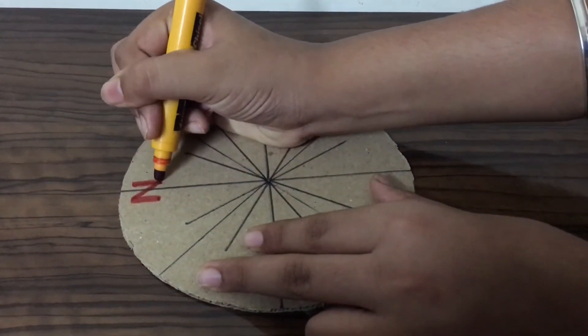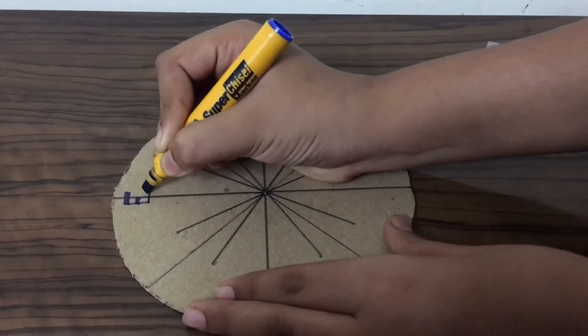Now we mark out the lines based on the directions for the angles that they represent.